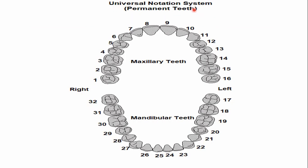In the universal notation system, the number of the permanent mandibular first molar — the left side is number 19, and the right side is number 30. The numbers run in a clockwise manner, continuing 20, 21, 22 across the arch. So 19 and 30 are the numbers for the mandibular first molars in the universal notation system.